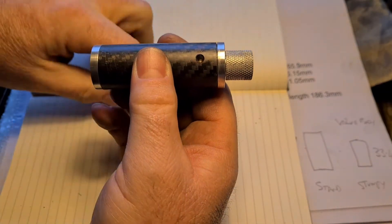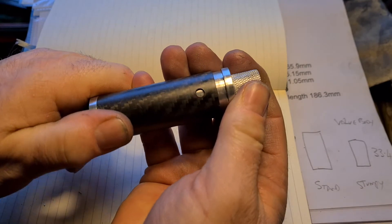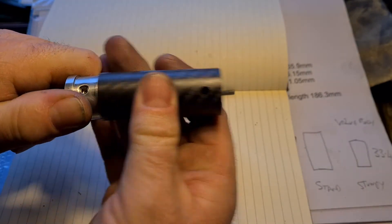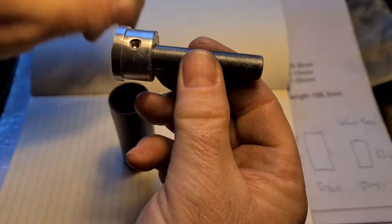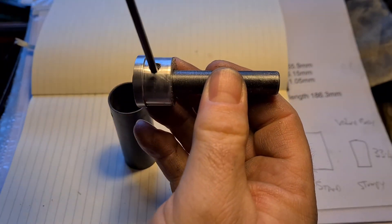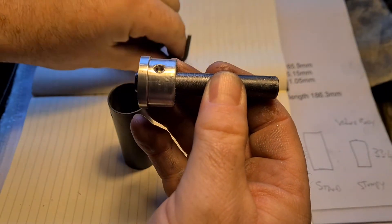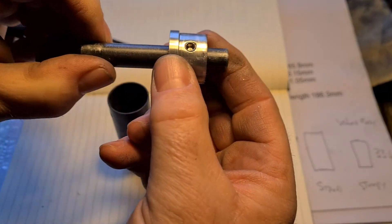Loosen the grub screw, pull it off, pull your shroud off, loosen the other grub screw, take the end cap off.